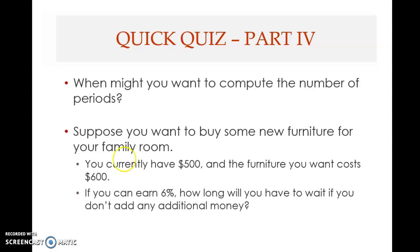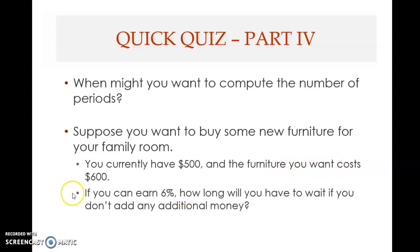Suppose you want to buy some new furniture for your family room. You currently have $500 and the furniture you want costs $600. If you can earn 6%, how long will you have to wait if you don't add any additional money? The three known elements: $500 is the present value. The furniture costs $600, meaning you need to grow to $600 — that is the future value. You can earn 6% per year — that is the interest rate, the third known element.